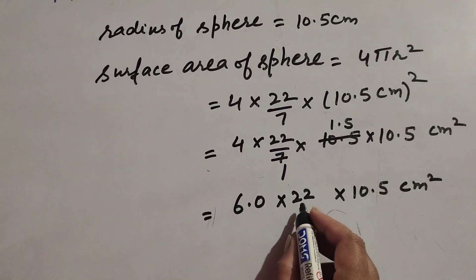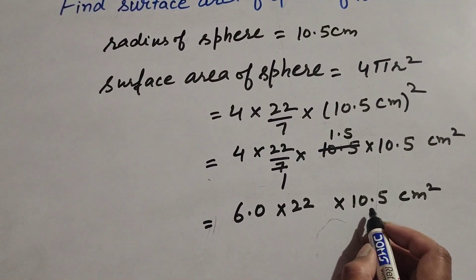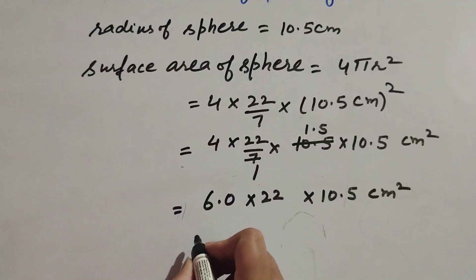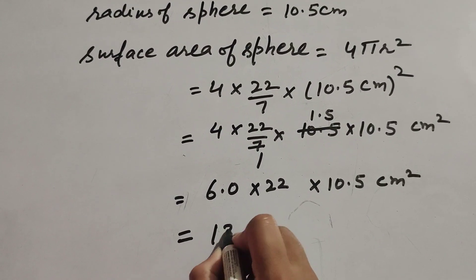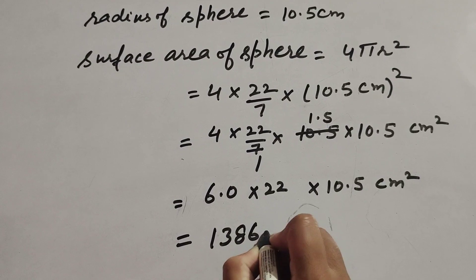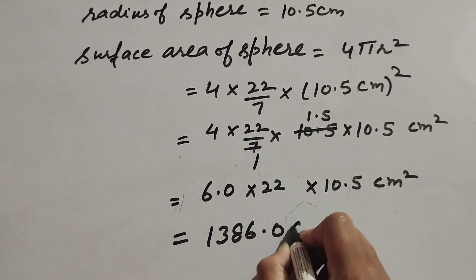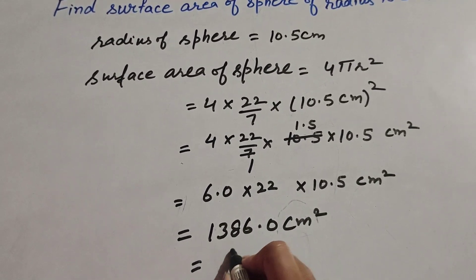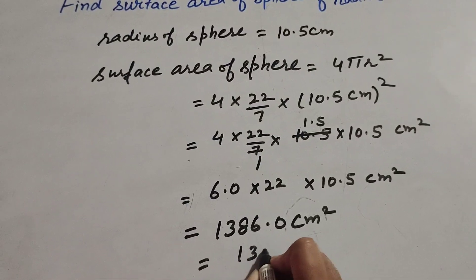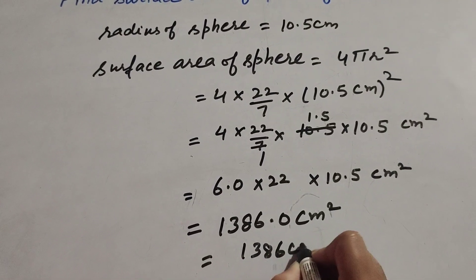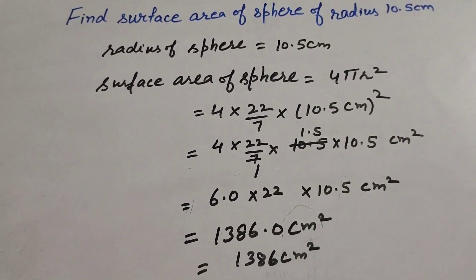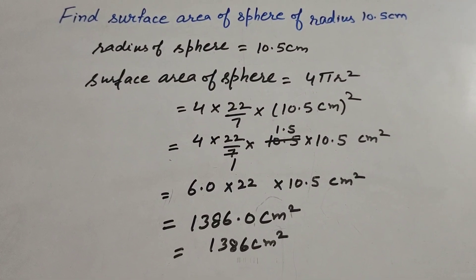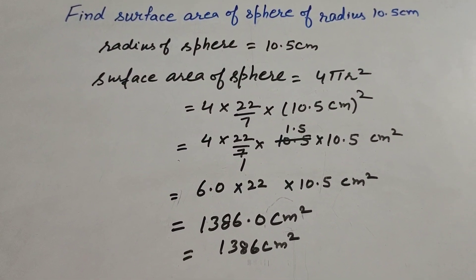6 × 22 × 10.5 gives the answer 1386.0 cm². Therefore, the surface area of the sphere is equal to 1386 cm².